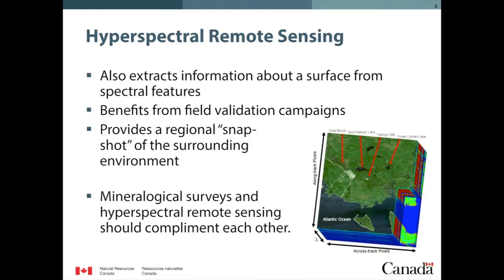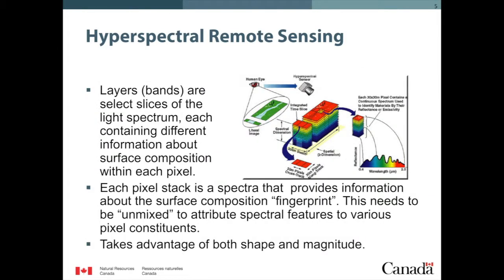Hyperspectral remote sensing involves looking at 200 or so different color bands in an image. In this case, from the EO-1 Hyperion sensor, we have an image of our site with 109 or so spectral bands. This is the abandoned tailings site, the Atlantic Ocean, with lots of lobster fishing going on. We wanted to see if we could join up with the geologists who go out and take their samples to see if we could utilize their data along with space-borne data to help them out.